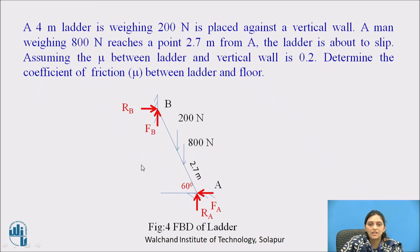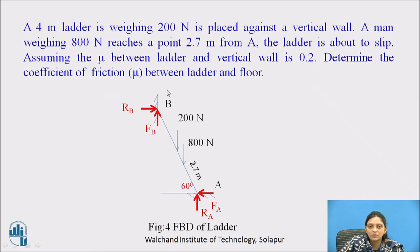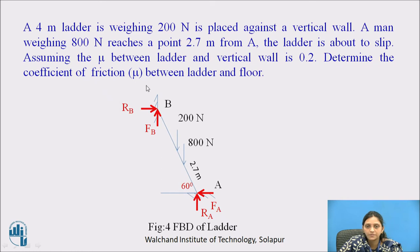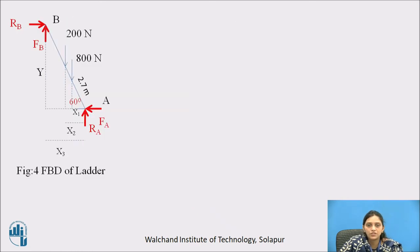Now the second numerical: A 4-meter ladder weighing 200 Newton is placed against a vertical wall. A man weighing 800 Newton reaches a point 2.7 meters from A. The ladder is about to slip. The coefficient of friction between the ladder and the vertical wall is 0.2. Determine the coefficient of friction between the ladder and the floor. Pause the video and try to solve it similarly to the first problem.